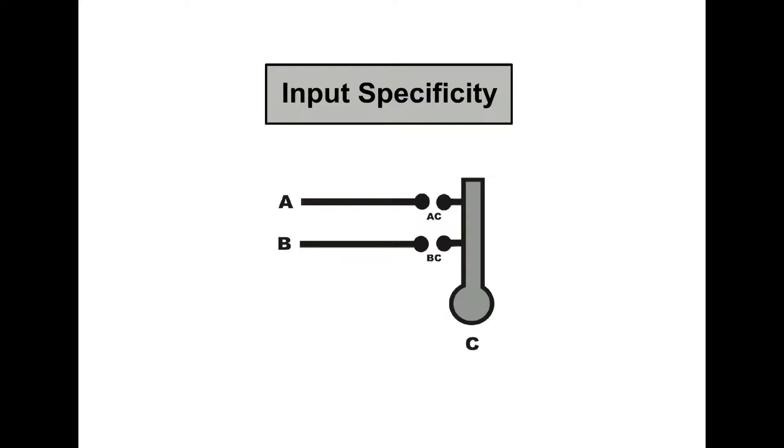Here we are taking AC and BC synapse as an example. When AC synapse receives high frequency stimuli, only AC synapse becomes potentiated and LTP develops at AC synapse but not at the BC synapse. This property is known as input specificity.